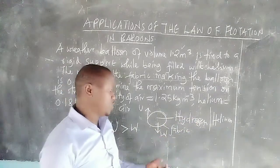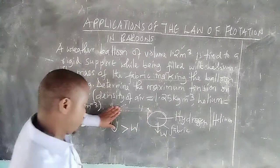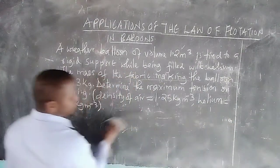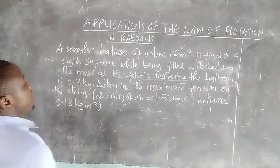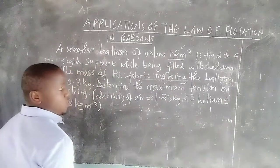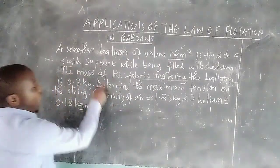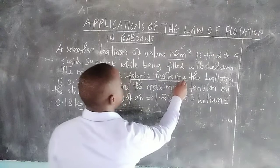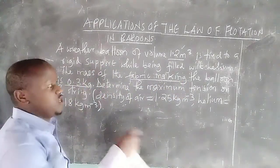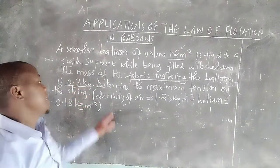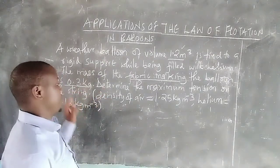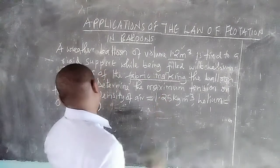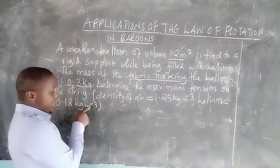We can see the application of Archimedes' principle in the calculation we are about to handle. The question describes a weather balloon of volume 1.2 cubic meters, tied to a rigid post while being filled with helium gas. The mass of the fabric making the balloon is 0.3 kilograms. We need to determine the maximum tension on the string. The density of air is given as 1.25 kilograms per cubic meter, and the density of helium is given as 0.18 kilograms per cubic meter.